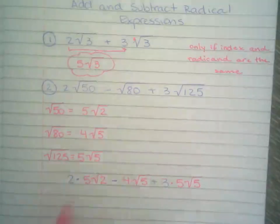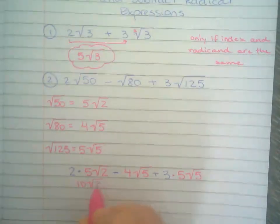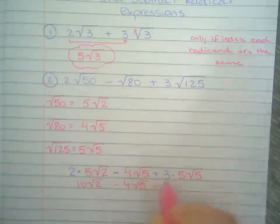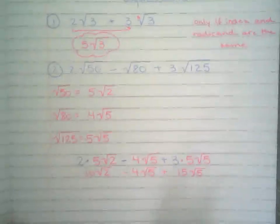Now I'm going to multiply to deal with that. So 2 times 5 is 10√2. Right there. And then here I have 15√5. Alright.